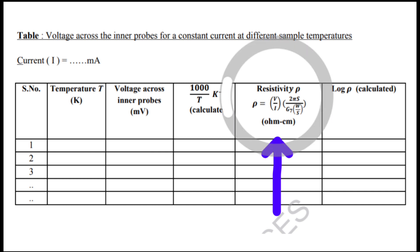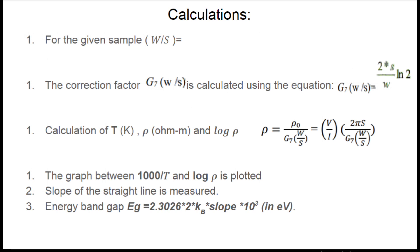These are the calculations which you have to do. For the given sample, you have to find W/S, which is thickness divided by probe spacing. Then you are going to calculate the correction factor G7, which is given by this equation. After that, you are going to note down the temperature of the oven in Kelvin, the resistivity, and the log of the resistivity.